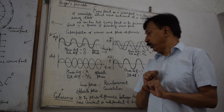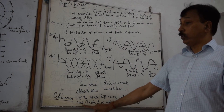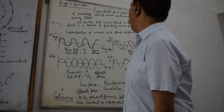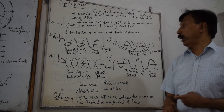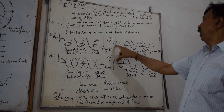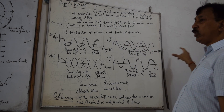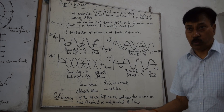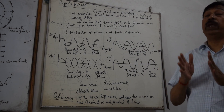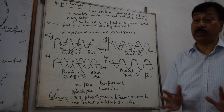One more thing I will talk about is coherence. If the phase difference between two waves is zero, constant, or independent of time, the waves are said to be coherent. You can observe that the phase difference of π/2 shown here is not changing — it is the same everywhere. On the other hand, if two waves have different frequencies, the phase difference will go on changing continuously and there will be incoherence. Coherent waves can be obtained if two waves are derived from the same source. Coherence is a fundamental necessity for interference to take place.